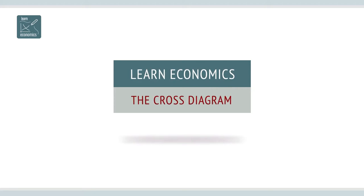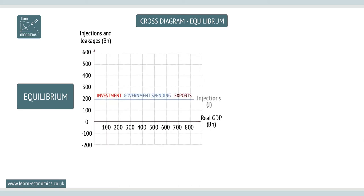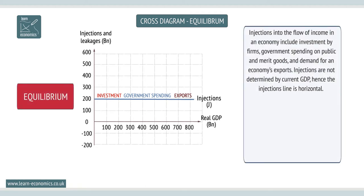National income equilibrium: the cross diagram. Injections into the flow of income in an economy include investments by firms, government spending on public and merit goods, and demand for an economy's exports. Because injections are not determined by the current GDP, the injections line is horizontal.